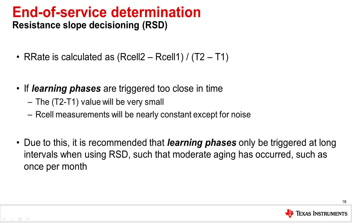How the device calculates the R rate is simple: it takes two R cell readings, computes R cell 2 minus R cell 1, and divides by the time stamp between those two readings. However, this brings up a limitation: if learning phases are triggered too close together in time, the T2 minus T1 value will be small, and since the device hasn't aged significantly, the R cell measurements will be very close — limited by noise and measurement inaccuracy. If you don't wait long enough for R cell values to change significantly between readings, you can get very erratic results. Because of this, when using RSD it is recommended to trigger learning phases at fairly long intervals — such as once every several weeks or once a month — so that moderate aging actually occurs between readings.